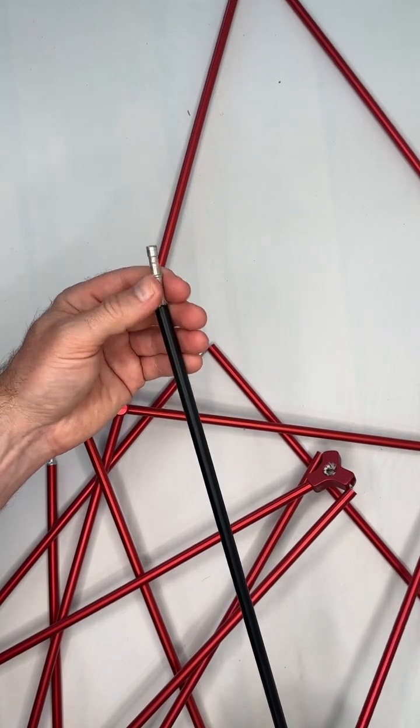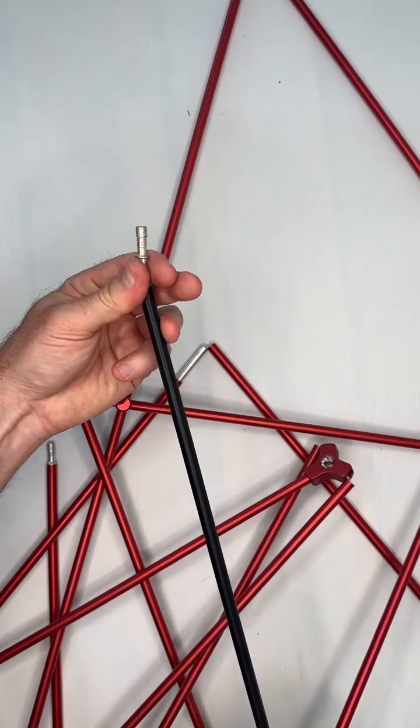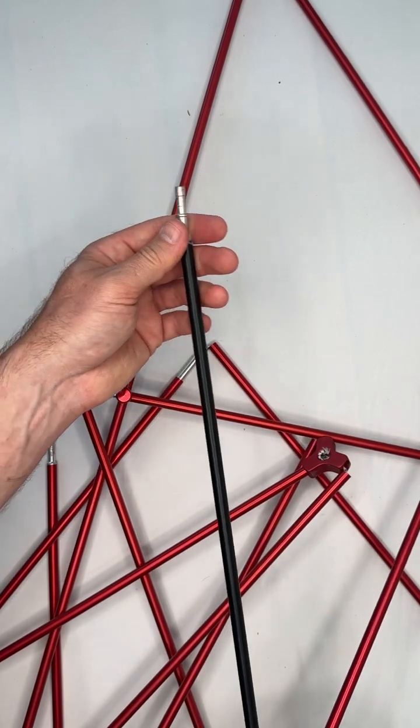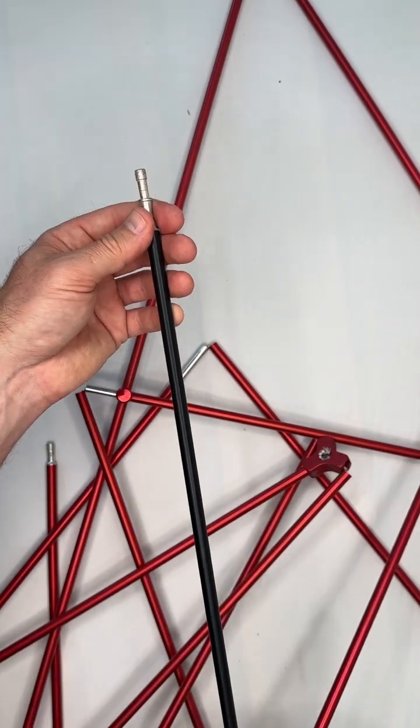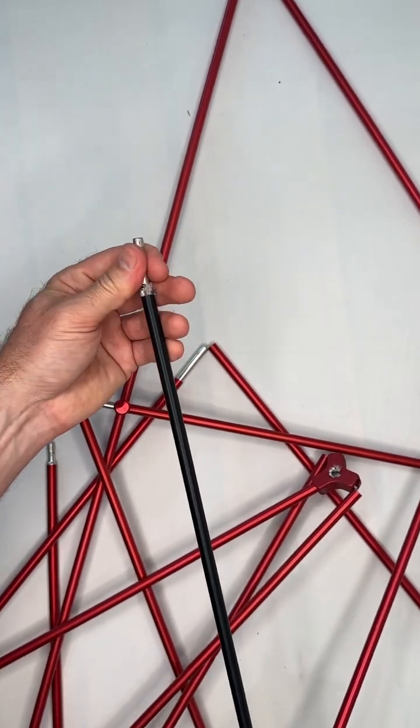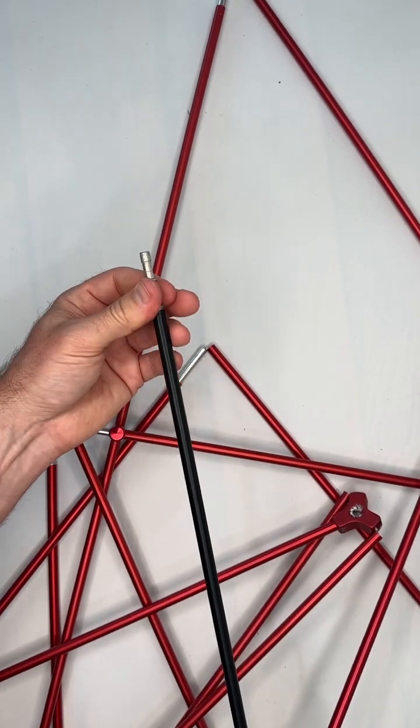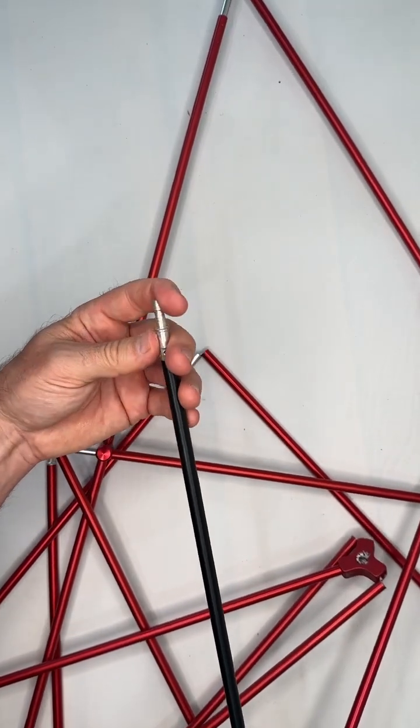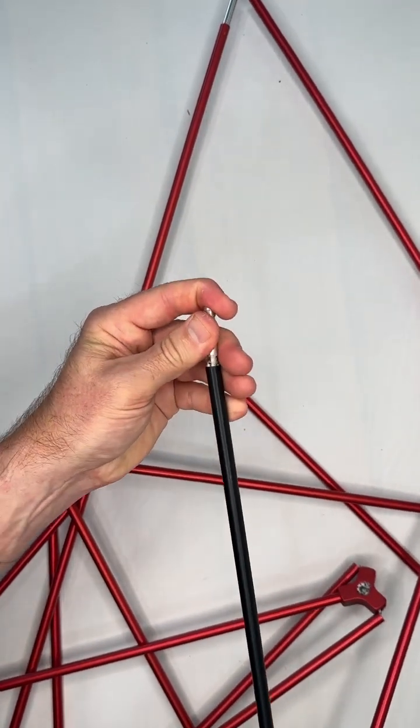This is color coded based upon the feet end of the tent, which is more narrow, versus the head end of the tent, which is wider. We've color coded the poles in order to help best fit that. This one here with the black.